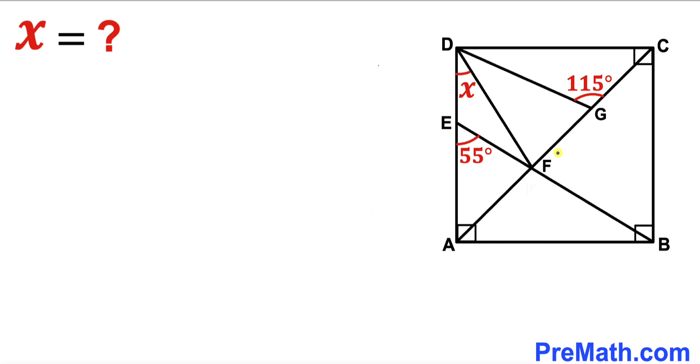We know that AC is the diagonal of this square, so this angle is 45 degrees and this angle is 45 degrees as well. Furthermore, side length AD must equal side length AB, so these two side lengths are equal. Here's our next step.